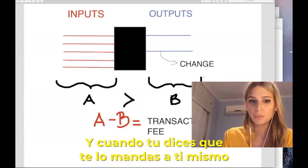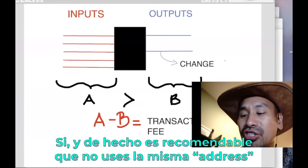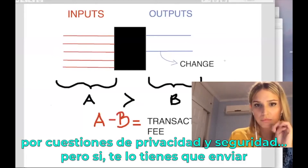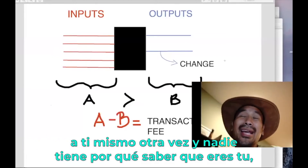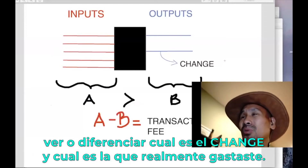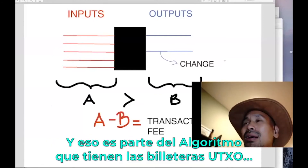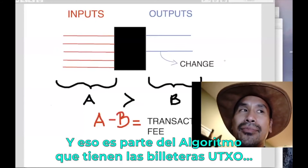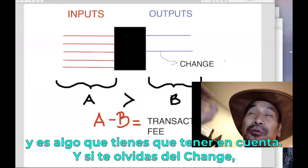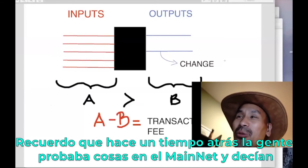When you send change to yourself, it goes to an address you control — not necessarily the same one. It's generally recommended not to reuse addresses for privacy and security. The best kinds of transactions are ones where it's impossible to tell which output is the change and which is the actual payment. Forgetting the change has happened many times, and wallet UTXO selection algorithms try to account for this.